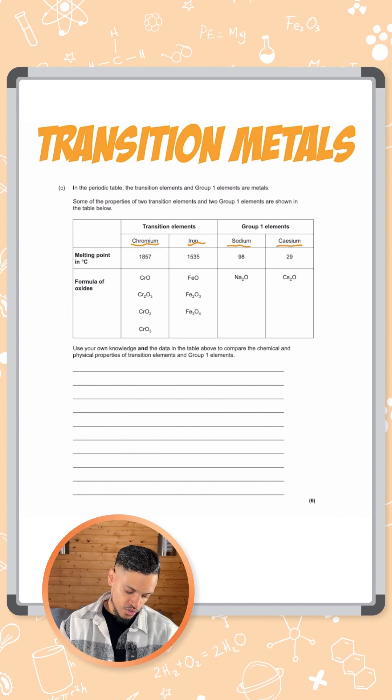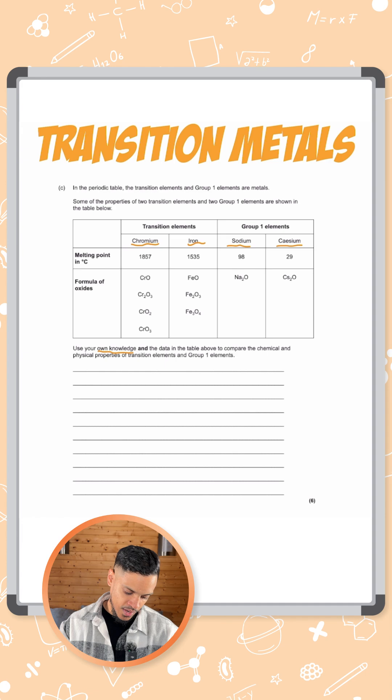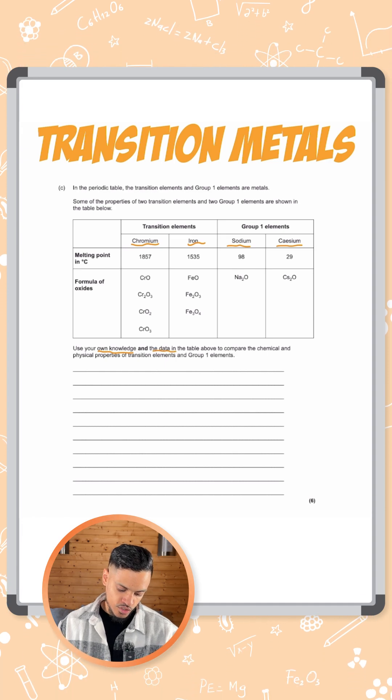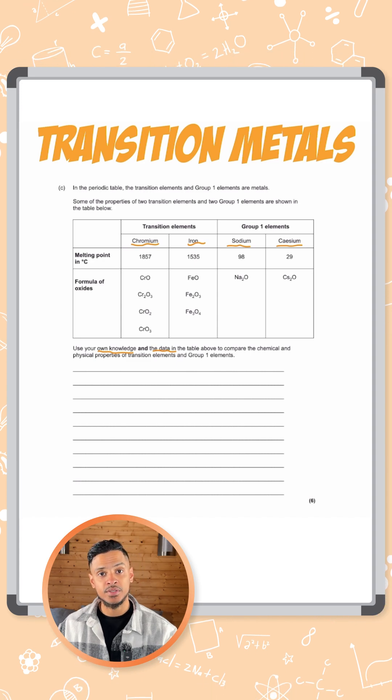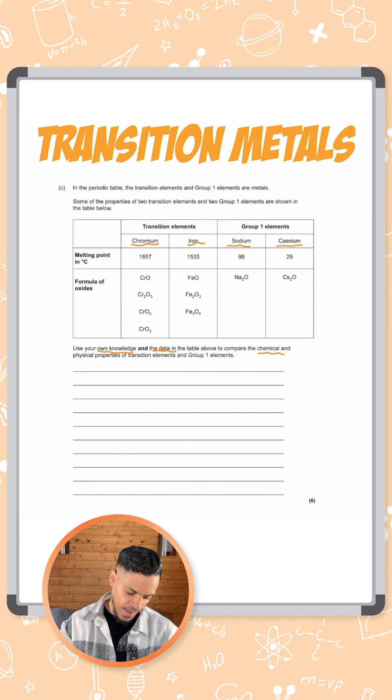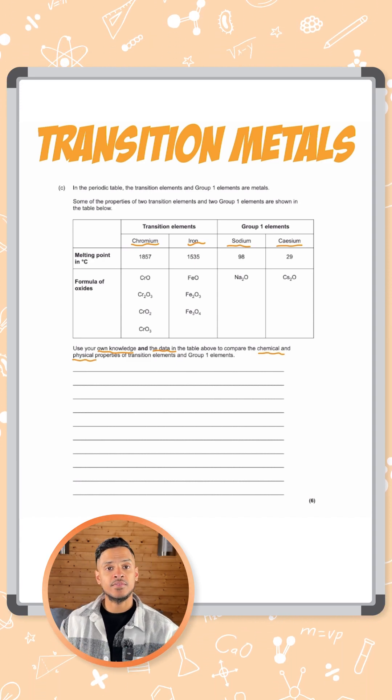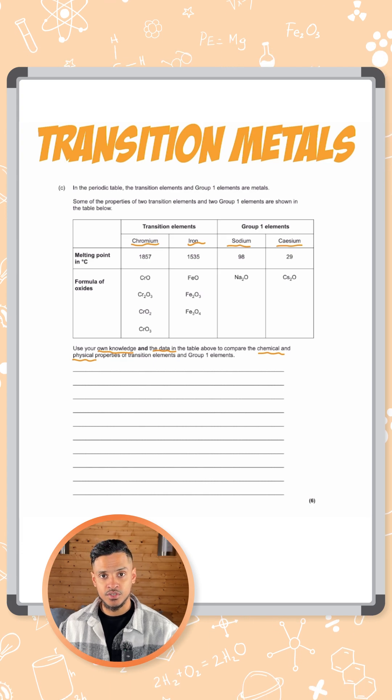The question says use your own knowledge as well as the data in the table to compare the chemical and physical properties of transition elements and group one elements. It says chemical and physical properties. So that's given us an indication into what this question wants.